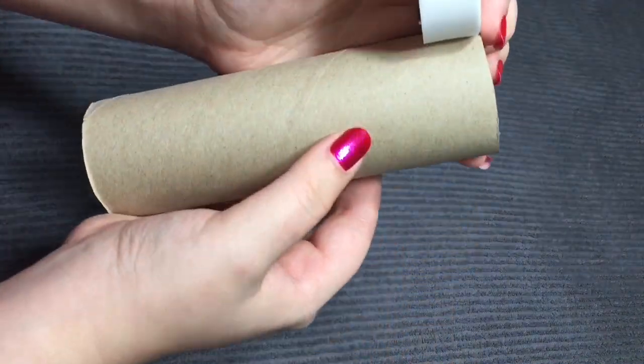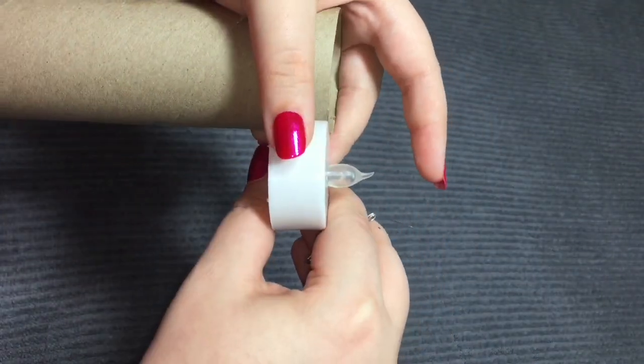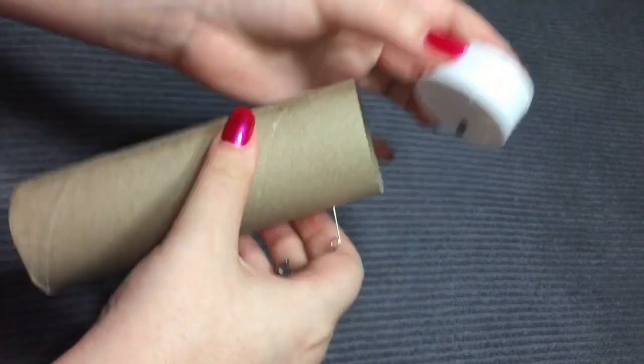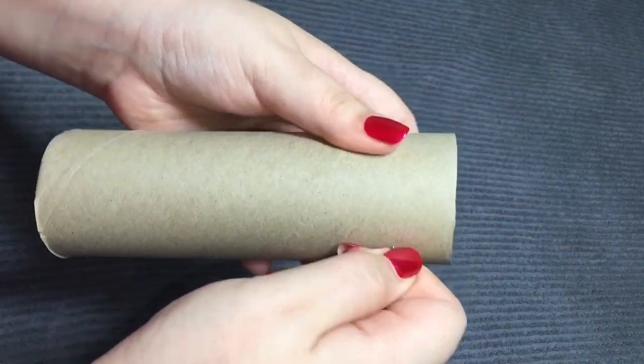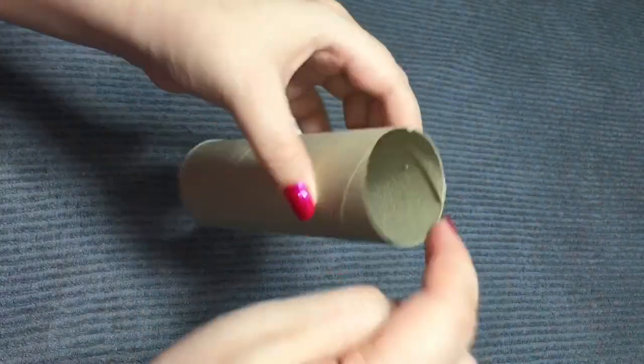Take your tea light candle and place it towards the top of your roll and take something pointy like a pin and poke a hole underneath the tea light candle. Do this on both sides opposite of each other.